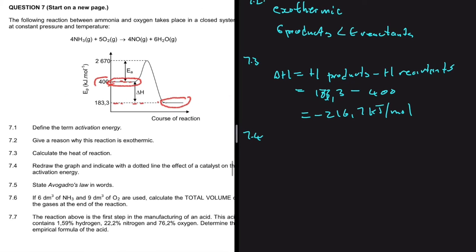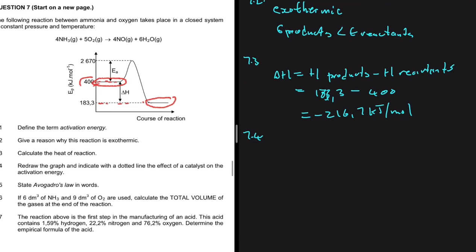7.4 asks us to redraw the graph and indicate with a dotted line the effect of a catalyst on the activation energy. First, let's conceptualize what a catalyst is. A catalyst is a substance that essentially lowers the activation energy for a reaction.